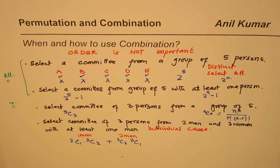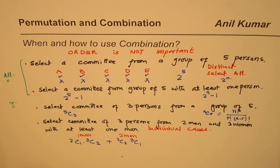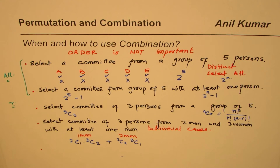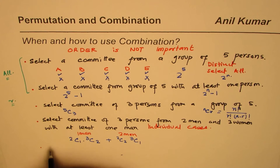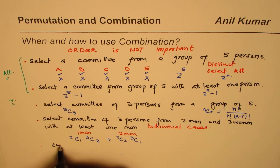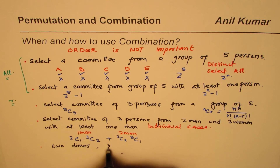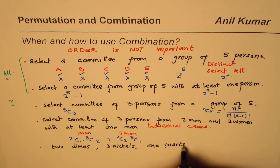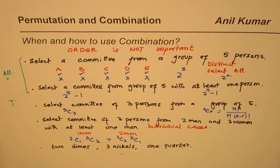There is one more scenario — when some objects are identical. Let's change the question: say we have two dimes, three nickels, and one quarter. If that is the case, what combinations of money can you make from this selection?